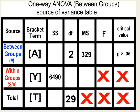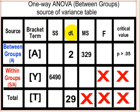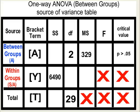This is how you do this problem — how you're going to fill in the blanks. There's your bracket term column, SS for sum of squares, DF for degrees of freedom, MS for mean squares, and F is the final ratio. I suggest that you familiarize yourself a lot with the original source of variance table.